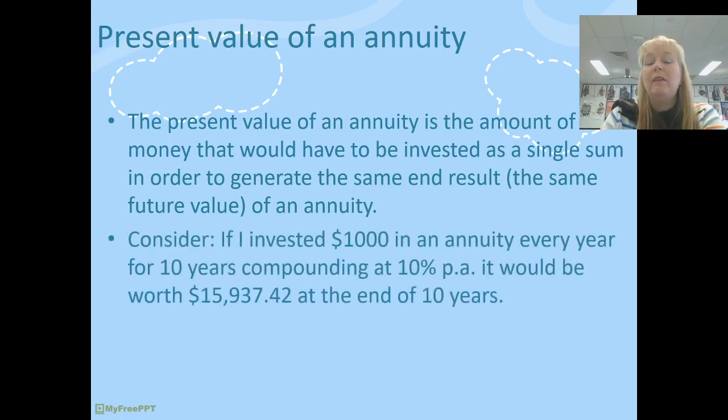So let's think about that as an example. If I was to invest $1,000 every year for 10 years, compounding at 10%, I've invested 10 times $1,000, basically $10,000. So if I was to invest that $10,000 and I used my future value formula, I would be able to work out it's going to come to roughly $16,000. So that annuity has actually earned me $6,000 in compound interest.